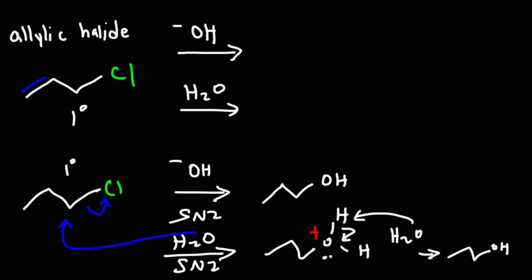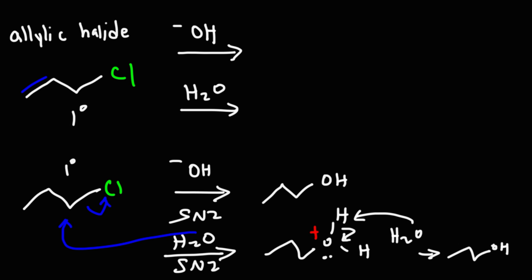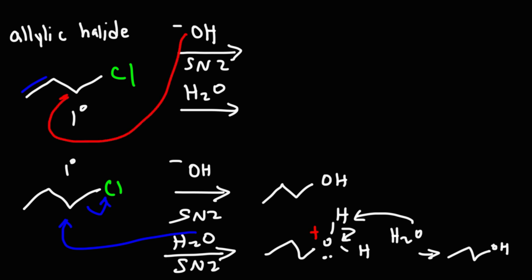With the allylic halide, even though it's primary, the situation is slightly different. This will still work for an SN2 reaction because we have a primary allylic halide and it's not hindered. So hydroxide will come from the back, attack the carbon, and expel the leaving group, giving us the substitution product.